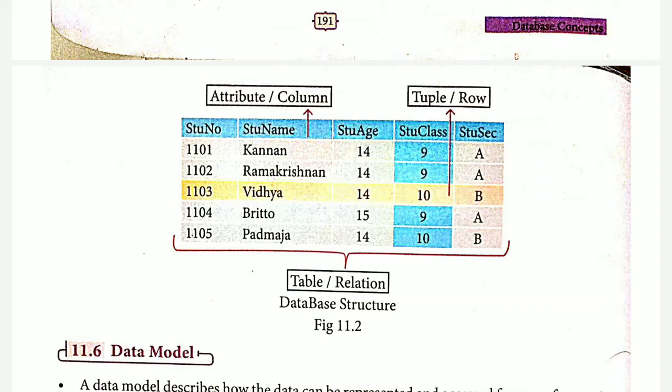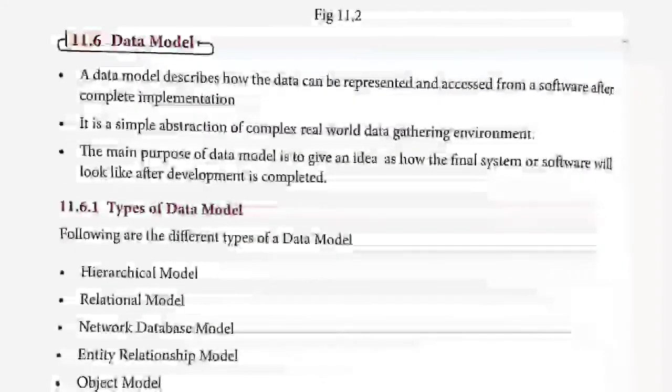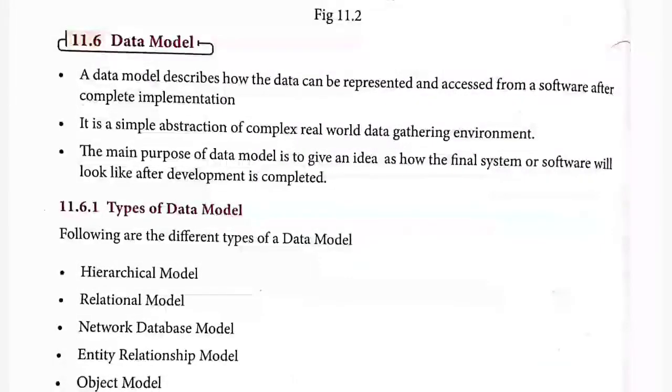The next thing is the database data model. You need a model — for example, when you buy a car, they denote the model by the production year. If you are buying a BMW car, they will tell you this model belongs to 2021. Like that, data must have some model. The car model tells us the basic model is the same but features are added or removed year by year. Similarly, this data model will have some structure based on which data will be added, removed, or updated.